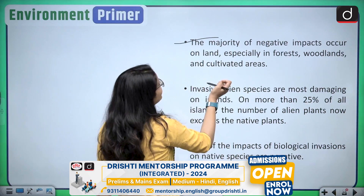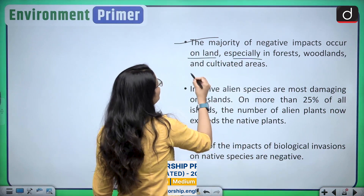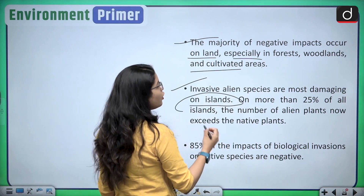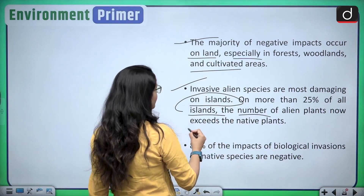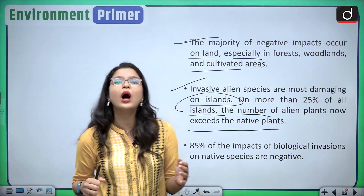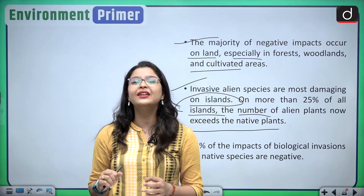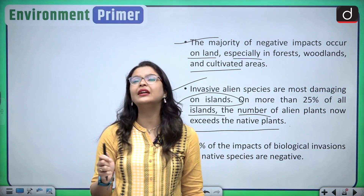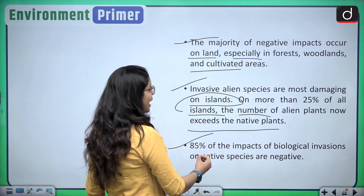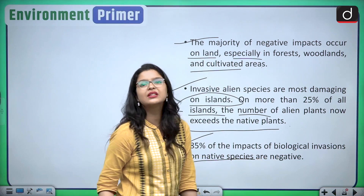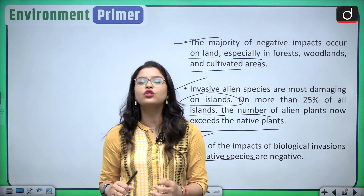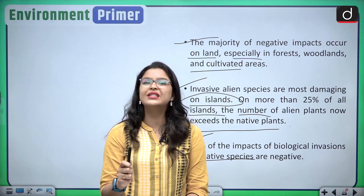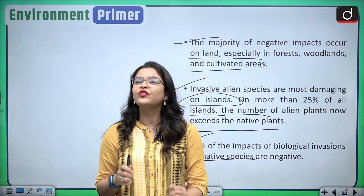The majority of negative impacts occur on land, especially in forests, woodlands, and cultivated areas. Invasive alien species are most damaging on islands — on more than 25% of islands, the number of alien plants now exceeds the native plants, which is very harmful to island ecosystems. Overall, 85% of the impact of biological invasions on native species is negative, and as a result the native species are facing extinction.